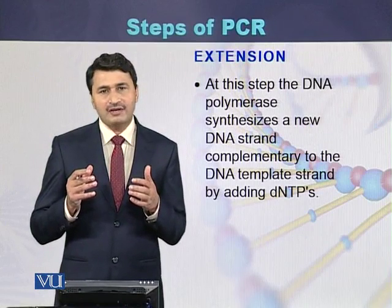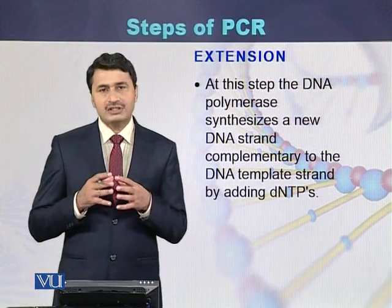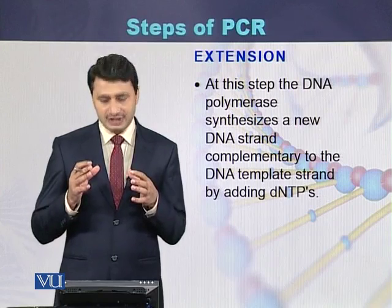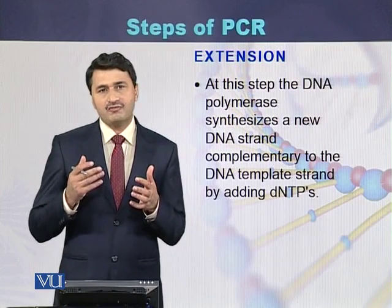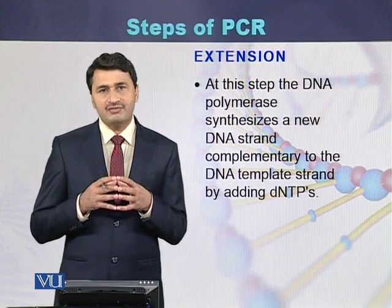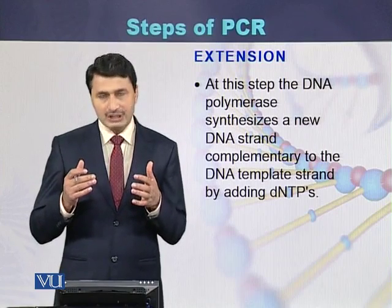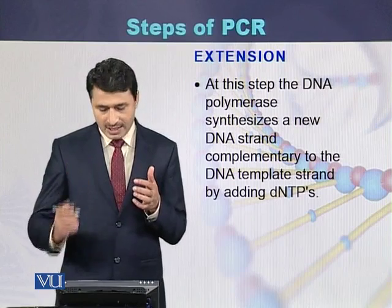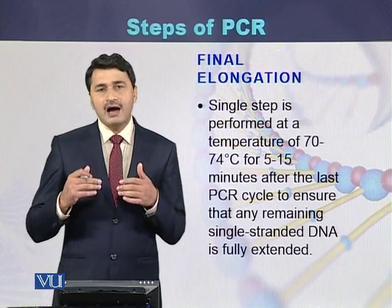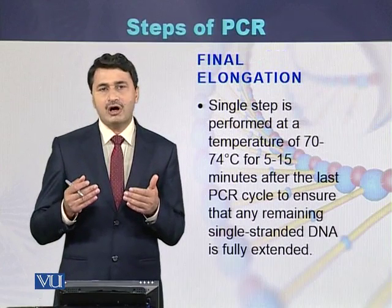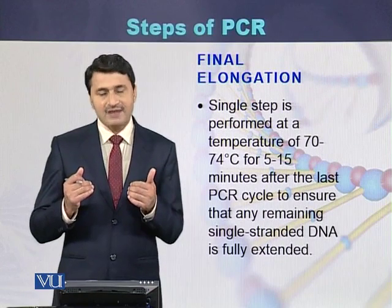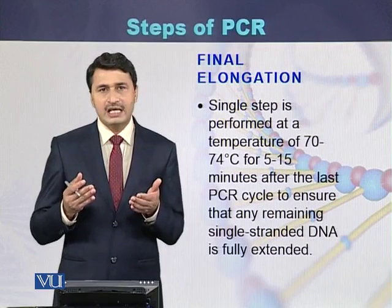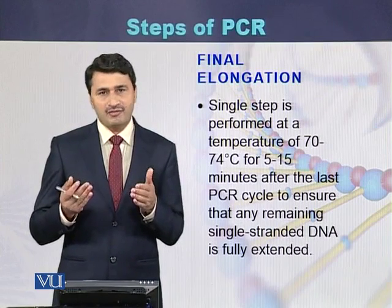After the regular cycling extension steps, a final extension is given because sometimes there are unfinished strands of DNA. This final extension can be 1 to 7 minutes to ensure any unfinished products are completed. During this step, DNA polymerase adds dNTPs to the newly synthesized strand. The final extension is typically performed at 70 to 74 degrees centigrade, commonly 72 degrees centigrade, for 5 to 10 minutes.